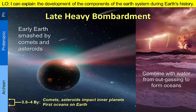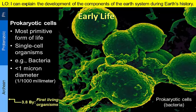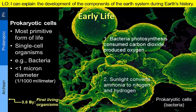The rest of the water came from outgassing volcanic eruptions as the hot Earth cooled. All life on Earth is cellular, and the most primitive life is represented by prokaryotic cells, such as bacteria, that are less than one micron in size. The early atmosphere was modified by two processes. First, bacteria evolved to use photosynthesis to consume carbon dioxide and produce oxygen. Second, sunlight broke down ammonia to form nitrogen and hydrogen. The hydrogen was lost to space while the nitrogen stayed around to form the major components of today's atmosphere.